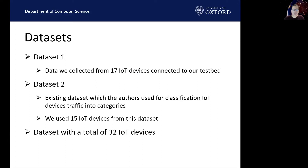They collected traffic from 28 IoT devices, such as cameras, switches, and hubs. Given the sheer amount of data they collected, we randomly selected only seven days from the dataset and excluded any devices that overlapped with our experiments. This left us with 15 IoT devices. Once we merged the datasets together from dataset one and two, this created 32 IoT devices we used for experiments.